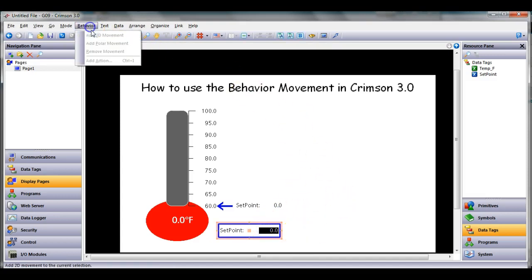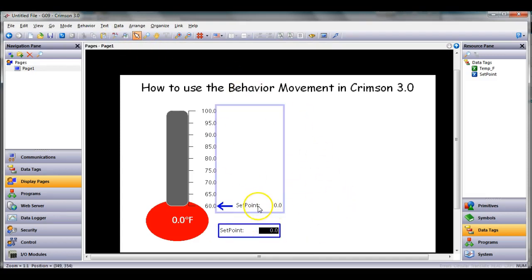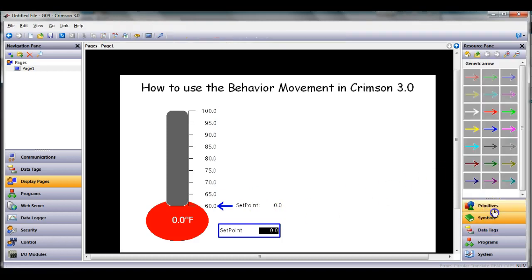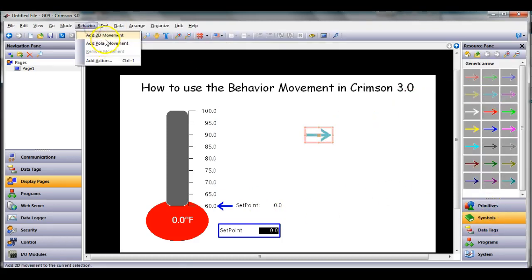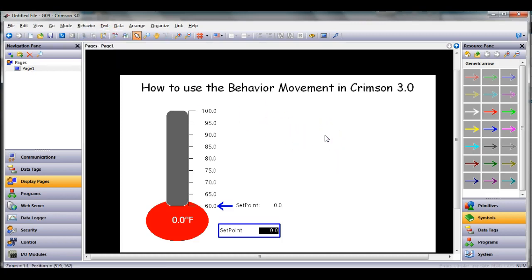I don't ever use that, but I'm just using right now the 2D. Notice you actually have to click on something for that option to be highlighted. That's just a quick video showing you how to use the behavior movement in Crimson 3.0. Have a great day.